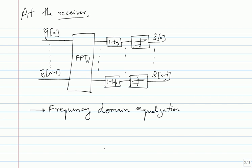Solutions for problem set seven will be put out soon. Problem set seven includes formulating equations for the zero-forcing linear equalizer and the MMSE DFE. Zero-forcing linear is straightforward — you make sure certain things go to zero. There will be an exam next week on problem set eight. There will also be one problem set on OFDM and one on coding, for a total of ten problem sets.